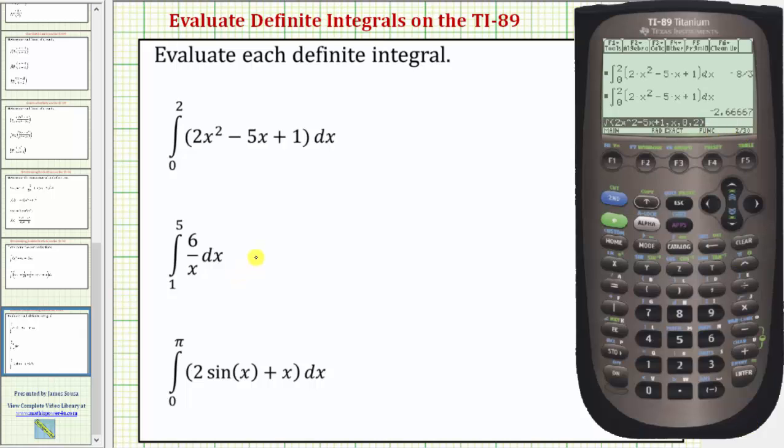Let's look at our second example. So again we press F3 number 2, enter the integrand function which is 6 divided by x, comma, the variable of integration which is x, comma, lower limit of integration which is 1, comma, upper limit of integration which is 5, close parenthesis and enter.